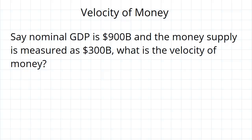From the equation we just introduced, velocity is equal to nominal GDP of 900 billion divided by the money supply of 300 billion and this will give us 3.